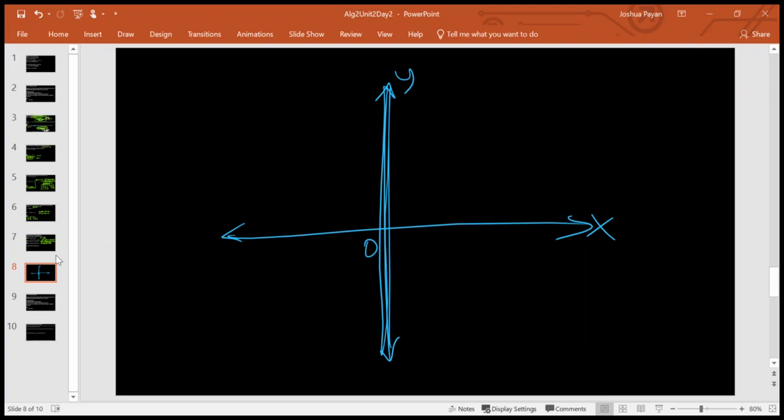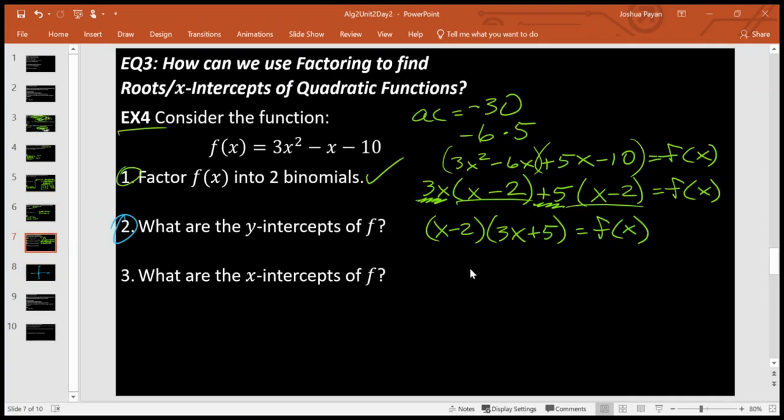Okay, so what I'm going to go ahead and do is I'm going to replace every instance of x with 0. So y-intercepts happen at x = 0. So I'm going to pretend I've got 3 times 0² minus 0 minus 10. Well, this all zeros out.